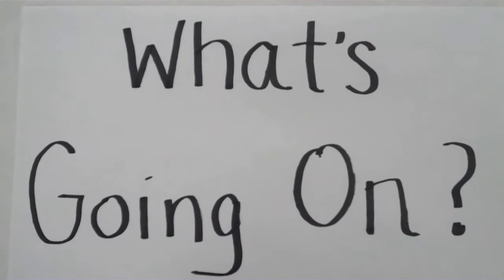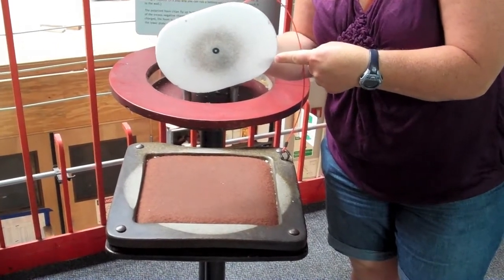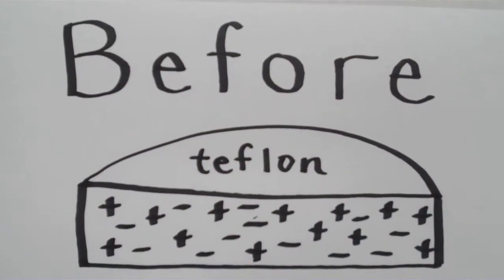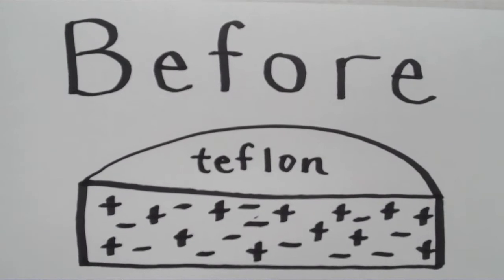So what's actually going on? So to start with, the Teflon pad has an equal number of protons and electrons, giving it kind of a neutral charge. And they're equally spread all over the paddle.